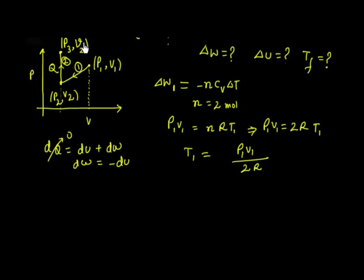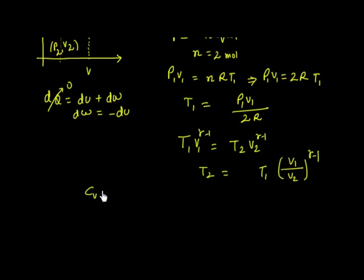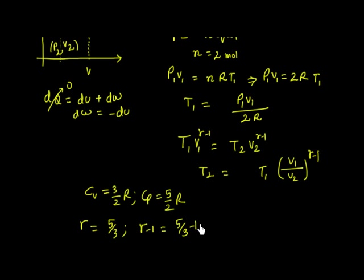Now I calculate T2. For an adiabatic process, TV^(γ−1) = constant, so T1 V1^(γ−1) = T2 V2^(γ−1), giving T2 = T1 (V1/V2)^(γ−1). For a monatomic gas, CP = 5/2 R, CV = 3/2 R, so γ = 5/3 and γ − 1 = 2/3. Therefore T2 = T1 (V1/V2)^(2/3).